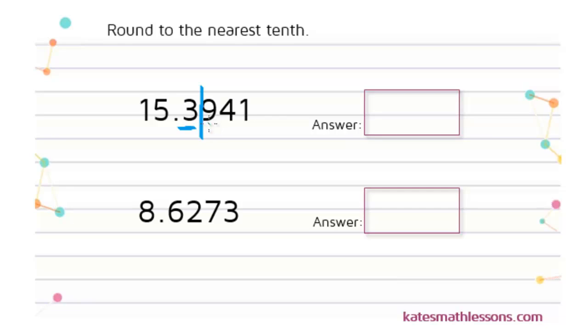Whenever it's 5 or greater that tells you you need to round up. So in this case this 9 is telling us that we need to round this 3 up to a 4. So our rounded answer to the nearest tenth would be 15.4.